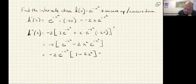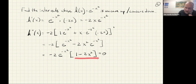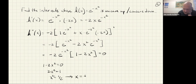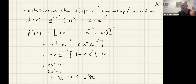Setting h double prime equal to zero: negative 2 can never be zero and an exponential can never be zero, so it has to be the factor (1 minus 2x squared) that equals zero. If 1 minus 2x squared equals 0, then 2x squared equals 1, x squared equals one half, and x equals plus or minus 1 over the square root of 2, which is approximately 0.7.